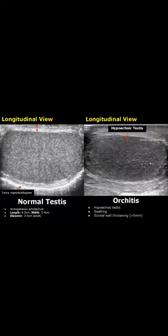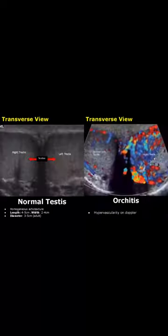Orchitis is the inflammation of the testis. The testis will be hypoechoic and swollen. Scrotal wall thickening will also be seen. On color Doppler, hypervascularity will be seen.